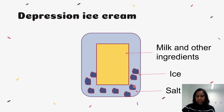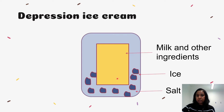Melting needs energy, which in this case comes from the milk mixture inside the inner bag. Heat energy is absorbed from the milk, forming ice crystals in between the thin fat molecules inside the milk ingredients. The more salt is added to the ice, the lower the freezing point. For the ice to melt, heat must be absorbed from the surroundings. So the milk ingredients will freeze and give you ice cream. This is how you apply freezing point depression to the ice cream making process.